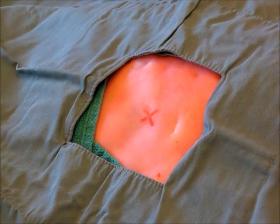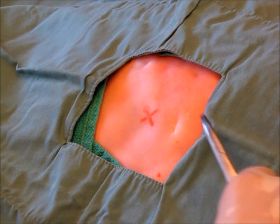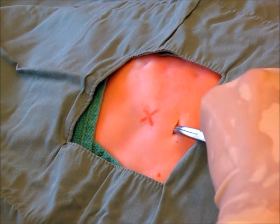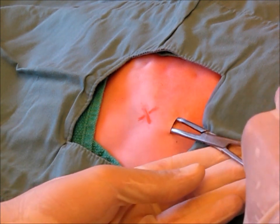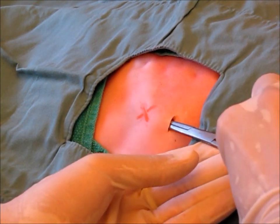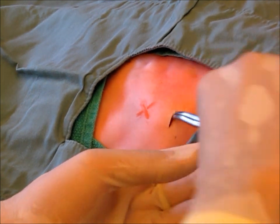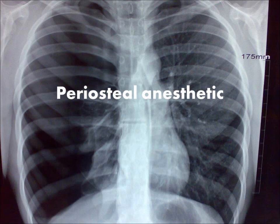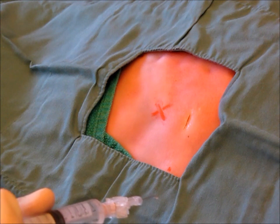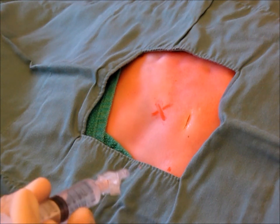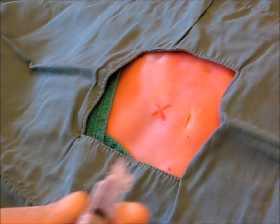Then, using a kelly, blunt dissect through the subcutaneous tissue, cephalad toward the desired intercostal space, being sure to always use two hands to stabilize the kelly. At this point, local anesthetic should again be infiltrated into the inferior and superior periosteum, the surrounding musculature, and the parietal pleura.